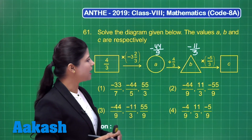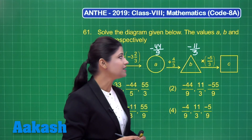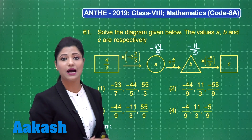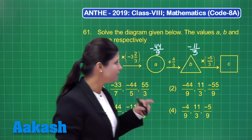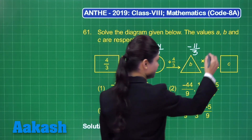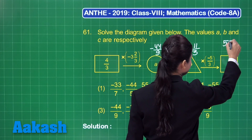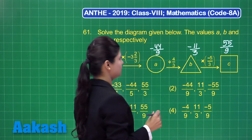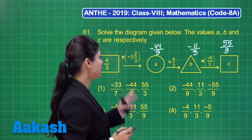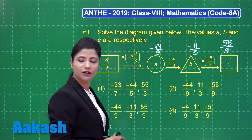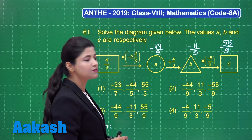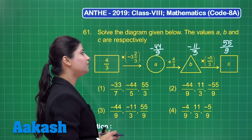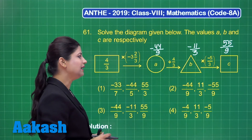Next, it is multiplied with minus 5 by 3. Two negative quantities multiplied give a positive result. 11 into 5 gives 55 in the numerator, while 3 into 3 gives 9 in the denominator. So we have A as minus 44 by 9, B as minus 11 by 3, and C as 55 by 9.